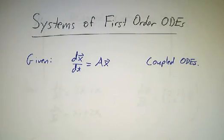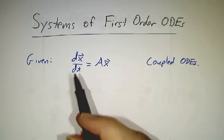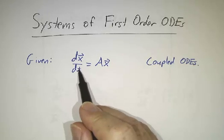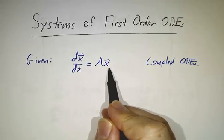Now we're going to talk about differential equations, systems of first-order ordinary differential equations, in particular, where the derivative of a vector is given by a fixed matrix times that vector.